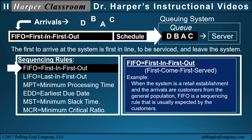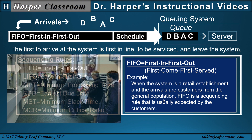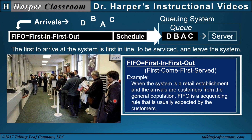FIFO — first in, first out — is also called first come, first served. An example is when the system is a retail establishment and the arrivals are customers from the general population. FIFO is a sequencing rule that is usually expected by the customers, because if one customer gets out of line and goes to the front of the line, the other people would notice and will probably say something, because FIFO is expected.